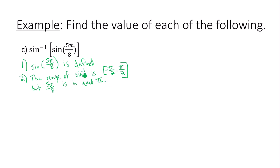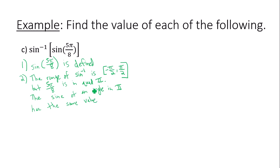This doesn't mean we stop and give up. The sine of an angle in quadrant 2 is positive, and the sine of an angle in quadrant 2 has the same value as the corresponding angle in quadrant 1, because sine is positive in both quadrants 1 and 2. So to make this inverse trig expression defined, I have to move 5π/8 to quadrant 1 — in other words, find the reference angle.